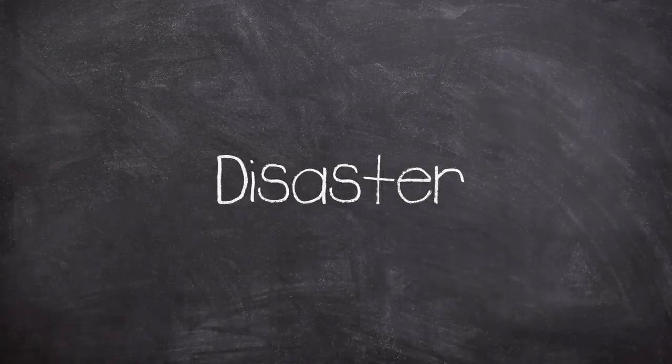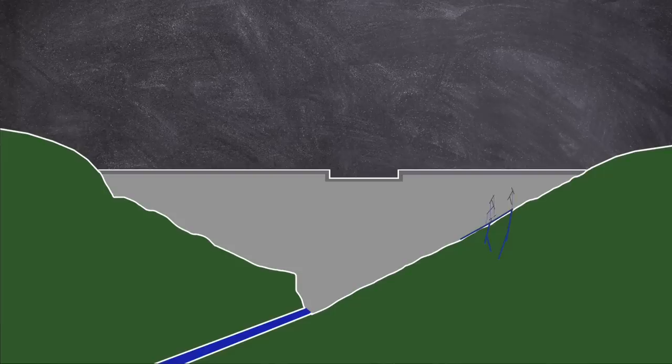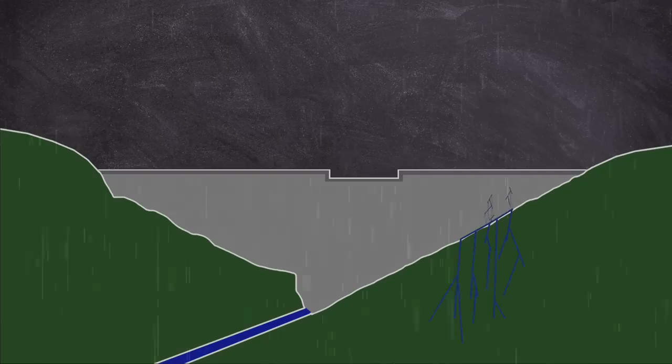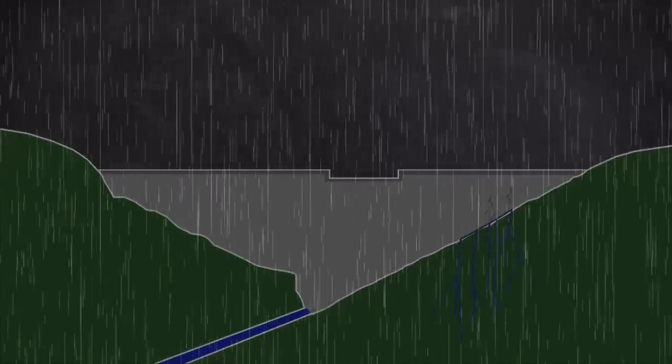The Disaster. So, the Malpassé Dam wasn't looking too great towards the end of November 1959. The dam's right side was still leaking, and now a downpour of rain had arrived and wasn't helping.